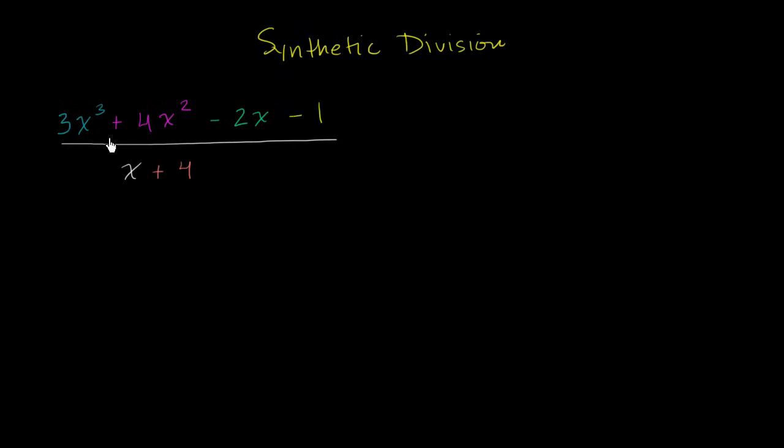So the first thing I'm going to do is write all the coefficients for this polynomial that's in the numerator. So let's write all of them. So we have a 3, we have a 4, it's a positive 4, we have a negative 2, and a negative 1. And you'll see different people draw different types of signs here depending on how they're doing synthetic division, but this is the most traditional. And you want to leave some space right here for another row of numbers.